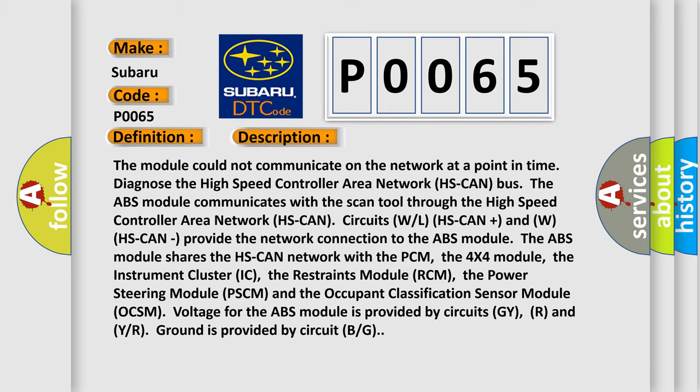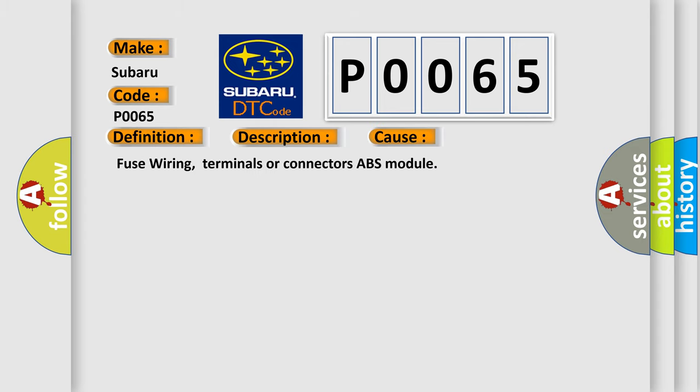WHS CAN plus and WHS CAN provide the network connection to the ABS module. The ABS module shares the HS CAN network with the PCM, the 4X4 module, the instrument cluster IC, the restraints module RCM, the power steering module PSCM, and the occupant classification sensor module OCSM. Voltage for the ABS module is provided by circuits GY and R, and ground is provided by circuit BG. This diagnostic error occurs most often in these cases: fuse wiring, terminals or connectors, and the ABS module.